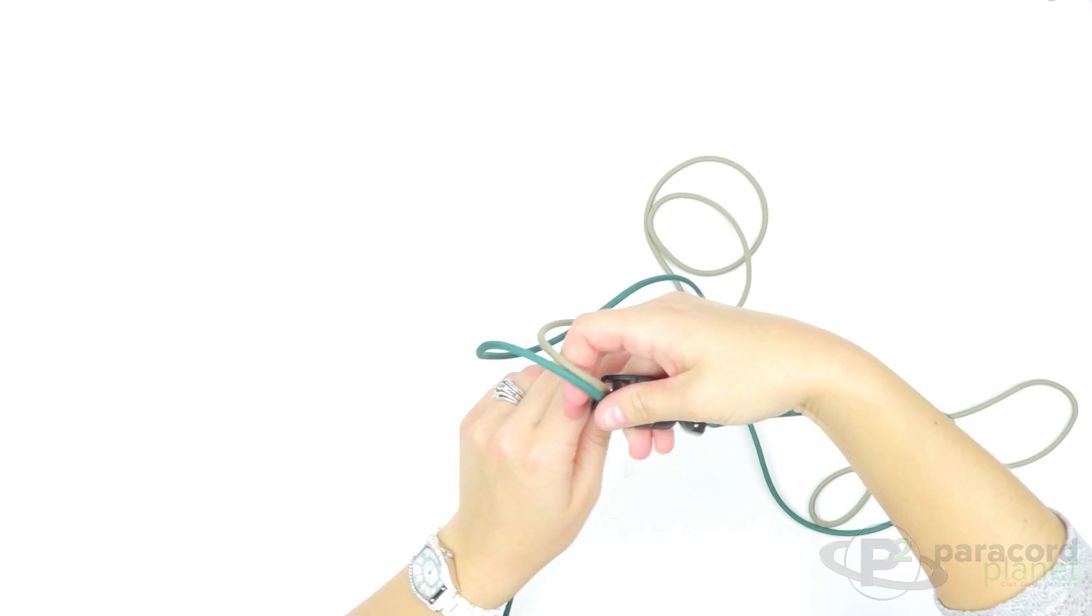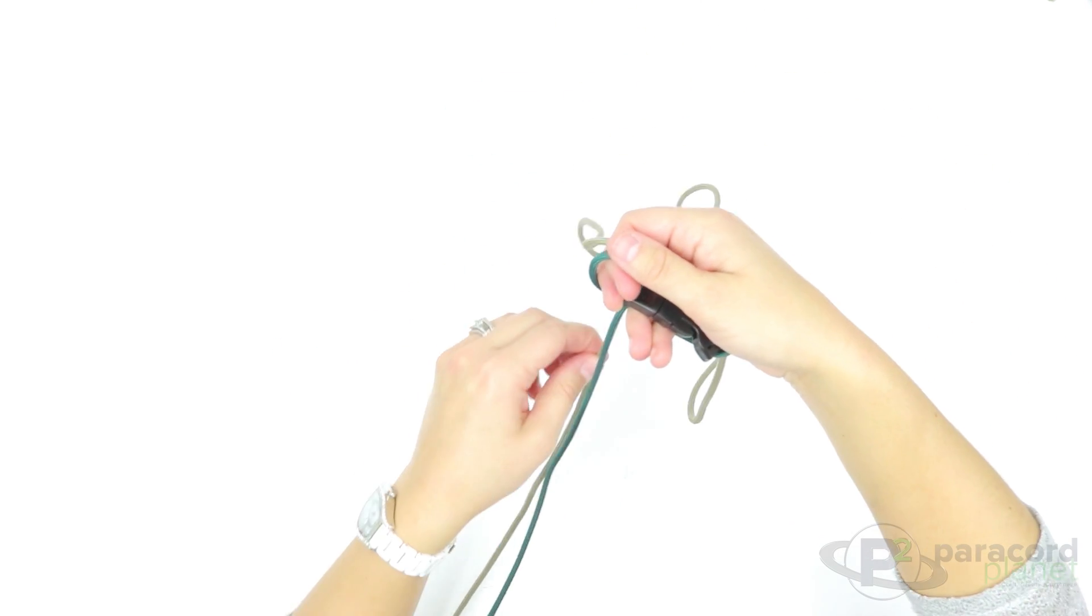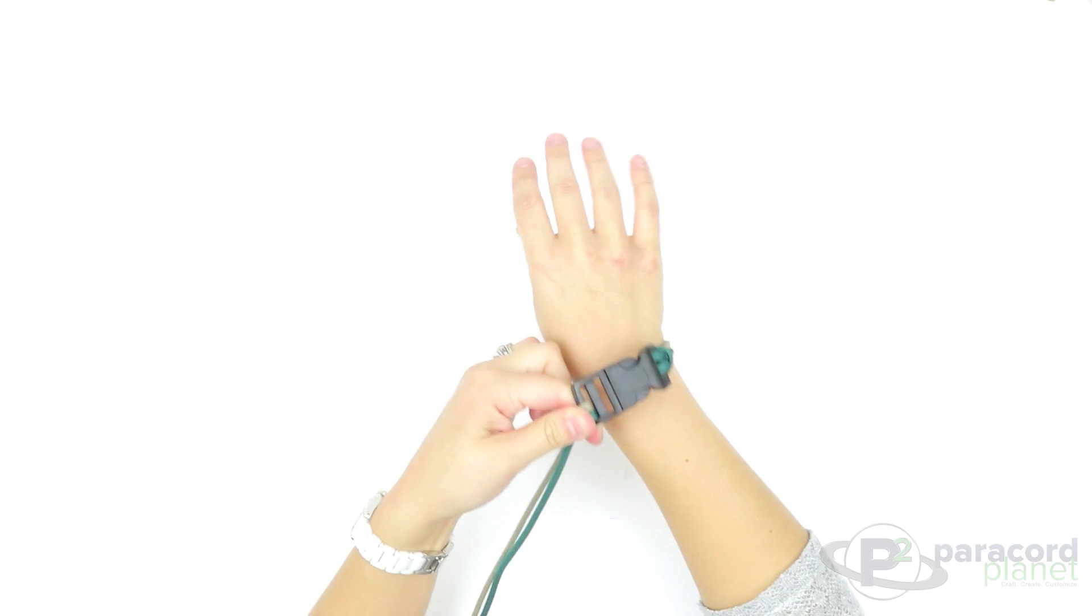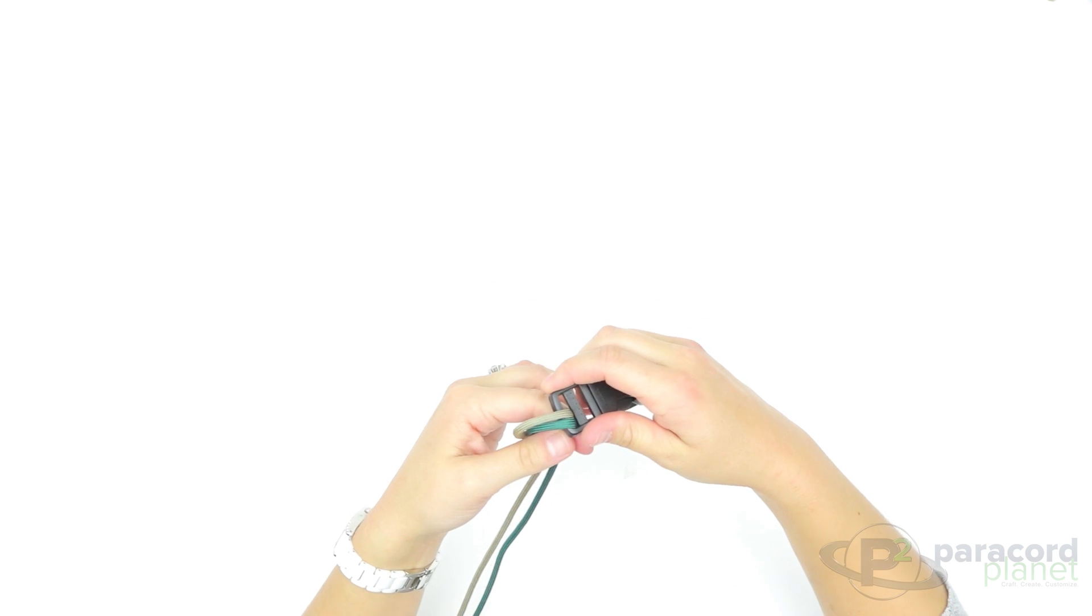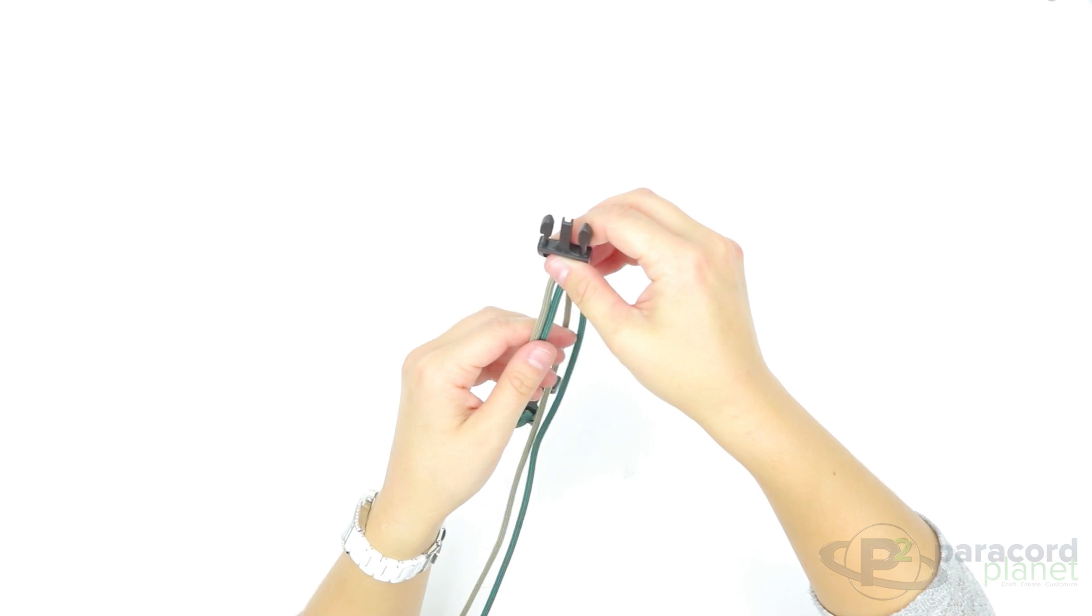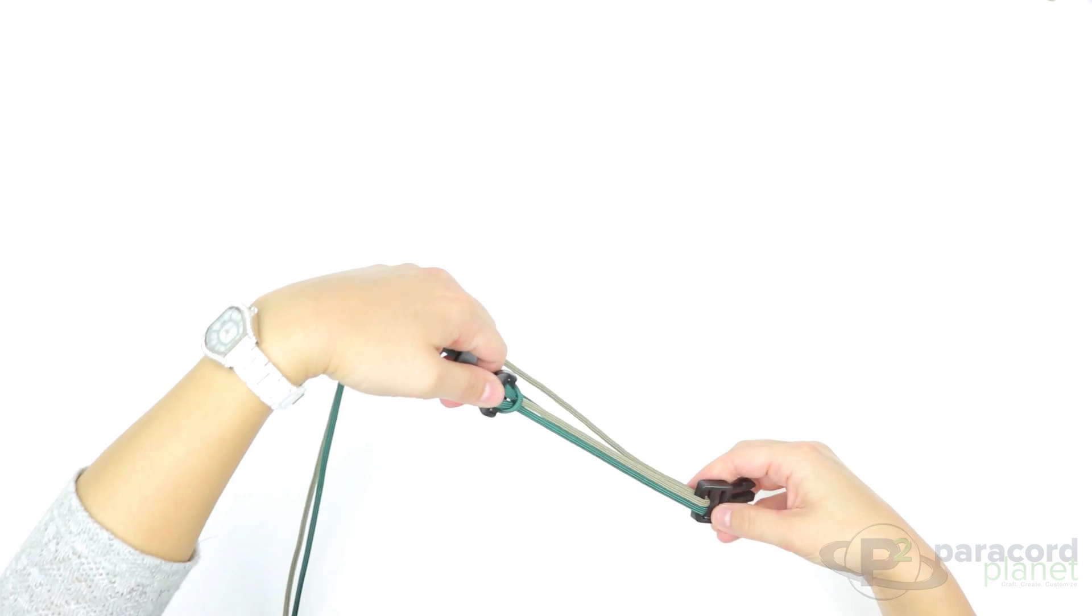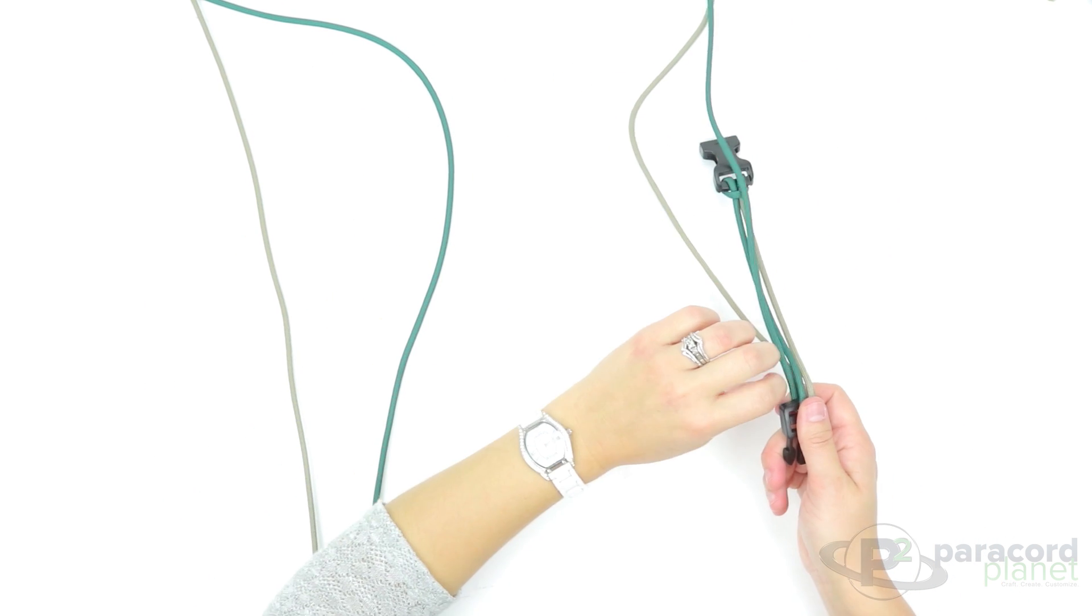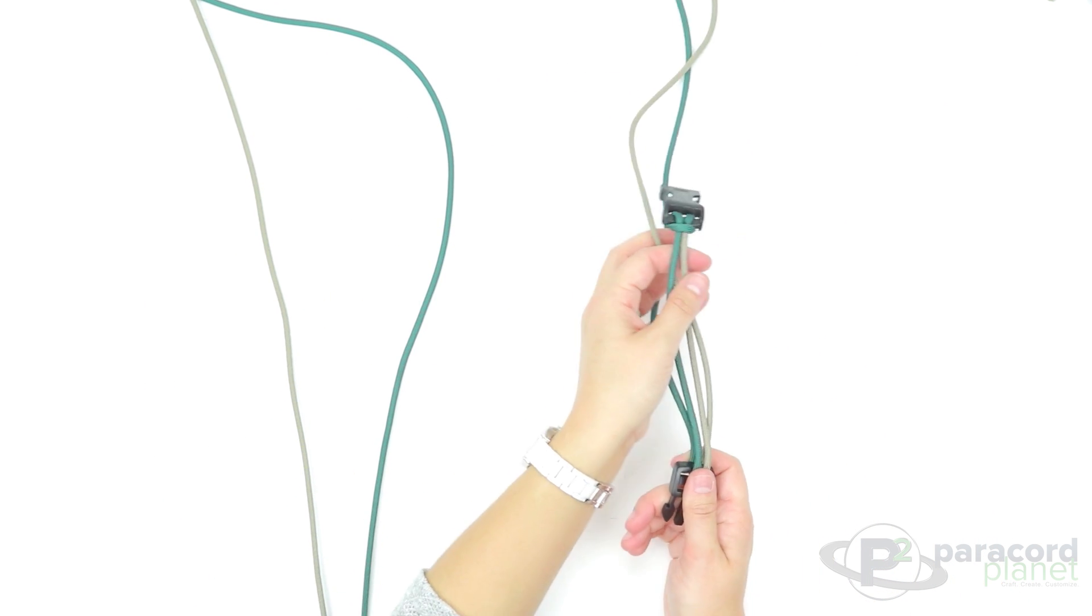Pull that down. You'll want to check the size of your bracelet at this point. You can unclasp it and you are going to go back in through the other end of the buckle, so I'm going to take my ends and go in through the top.